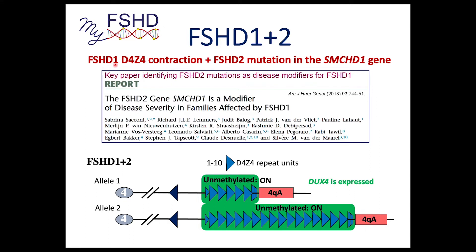FSHD1 plus 2 is when you have a D4Z4 contraction giving FSHD1 and also mutations in the SMCHD1 gene. It came out a few years ago that the FSHD2 gene is a modifier of severity. There's a lot of variability in the clinical presentation of FSHD within families, and a lot of that is dictated by epigenetics. Since SMCHD1 is an epigenetic regulator, some people with FSHD1 may also have FSHD2.